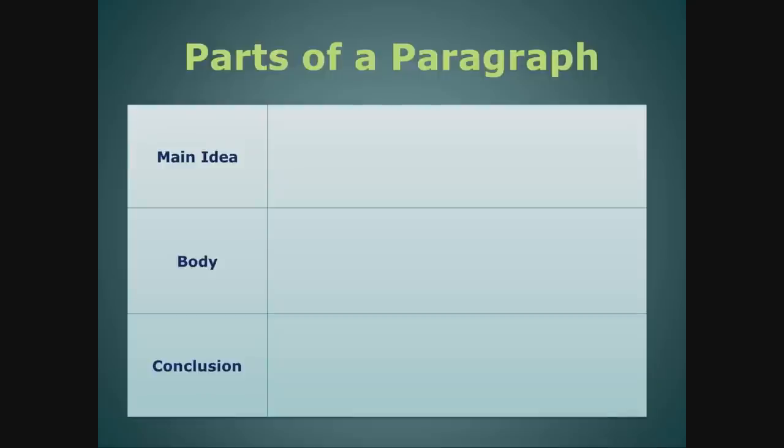Parts of a paragraph. A paragraph starts with the main idea. It tells the reader what you are going to talk about. The body gives details about the main idea. The conclusion is the end of the paragraph. It repeats the main idea in a slightly different way. A grid like this can help us organize our paragraph.